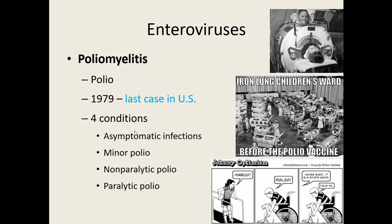If your diaphragm is paralyzed, you can't breathe and you don't survive. To help individuals survive so they could fight off the virus, they were placed in an iron lung — your head stuck out with a little mirror at the top. The iron lung created pressure changes: when pressure rose it pushed air out of the body, and when pressure decreased the lungs expanded and air went in — doing what the diaphragm is supposed to do.